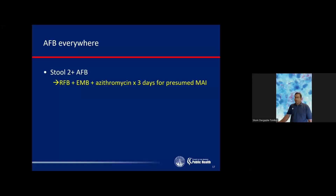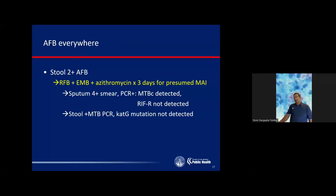Additional evaluation slowly came back showing that the patient had disseminated miliary pulmonary tuberculosis. Rapid molecular testing — Xpert MTB/RIF — was done in-house. The stool PCR, sent through Mayo, showed no RIF resistance mutation detected. The patient continued to have diarrhea and fever, and there was concern about drug malabsorption.